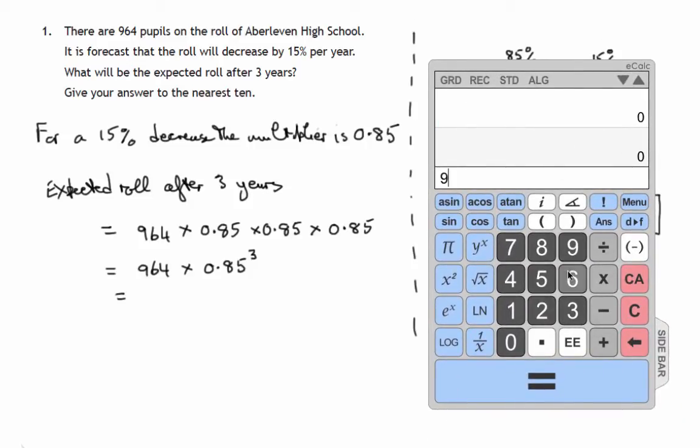We have to take 964 times 0.85 raised to the power 3. And that comes to 592.01, etc.